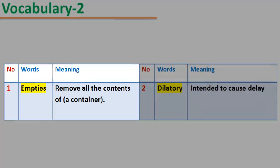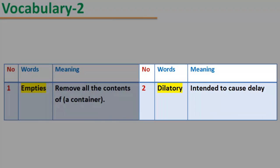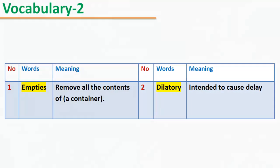Vocabulary 2. Number 1. Empties: remove all the contents of a container. Number 2. Dilatory: intended to cause delay.